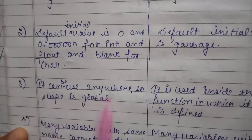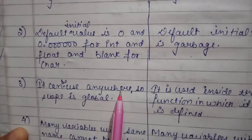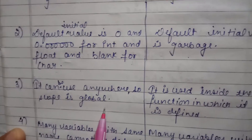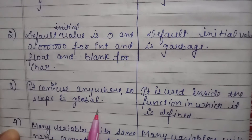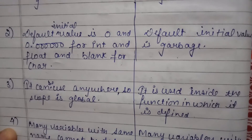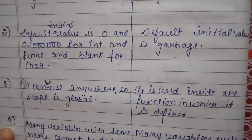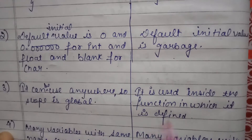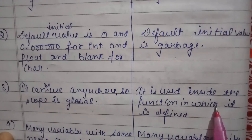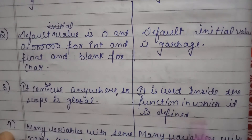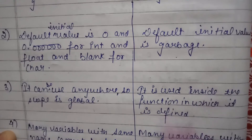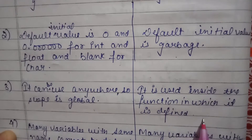The third difference is scope. Global variables can be used anywhere because the scope is global — throughout the execution of the entire program. But local variables can only be used inside the function where they are defined.